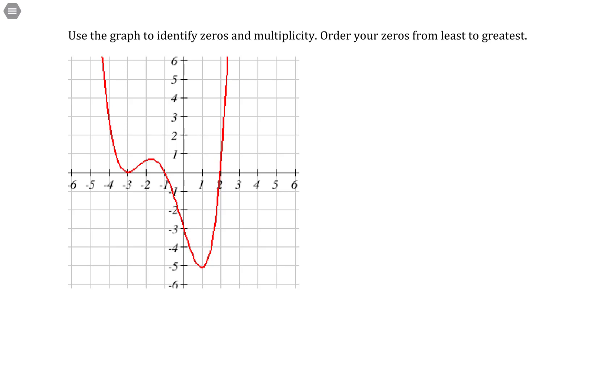So the zeros are locations where the graph is going to either touch the x-axis or pass through the x-axis. And these would be real zeros, complex zeros that doesn't occur.